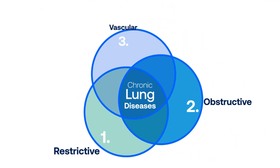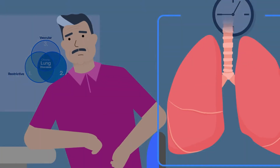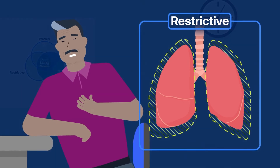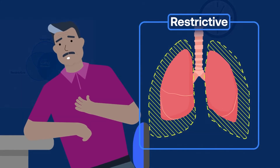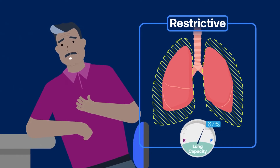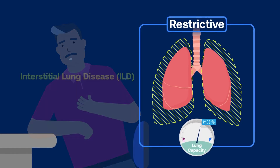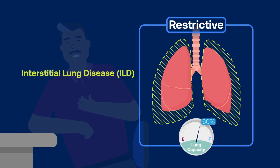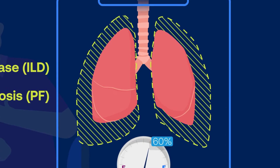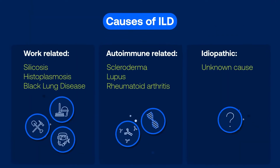Restrictive lung diseases result in you not being able to inhale air as easily. The tissue of your lungs is stiffer than usual and harder to fill with air, and you may find it difficult to take a deep breath. Your disease may also be referred to as an interstitial lung disease or pulmonary fibrosis, which means a scarring of the lung tissue.